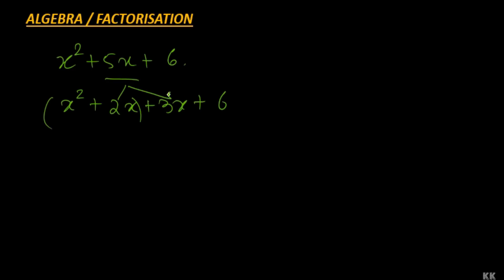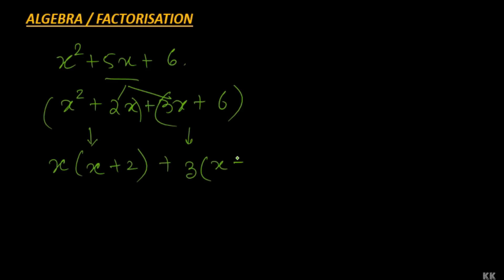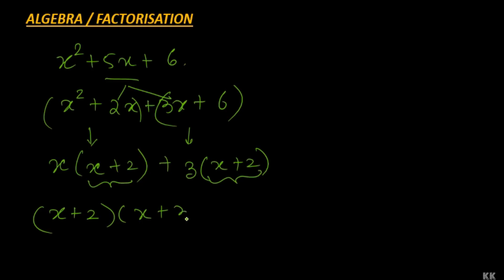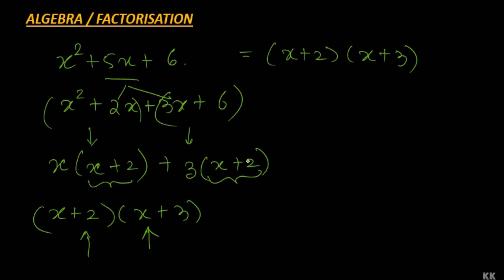Now we split and solve: x square plus 2x plus 3x plus 6. Combining the first two terms, x comes out as common factor leaving x plus 2. From the second group, 3 comes out as common leaving x plus 2. Now from the two groups, x plus 2 is a common factor, and we are left with x plus 3. Both factors are in their irreducible form, so the factorized form of x square plus 5x plus 6 is x plus 2 into x plus 3.